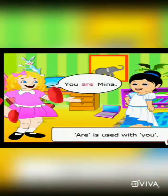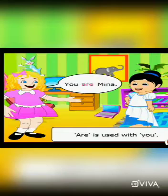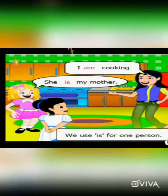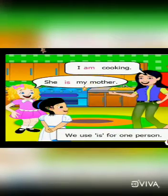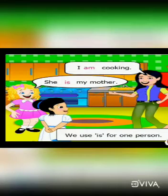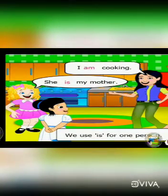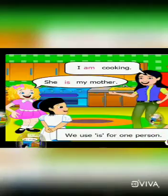Like: 'You are a boy.' 'Are' is used with 'you'. Ritu says: 'She is my mother.' We use 'is' for one person, one object, or one animal. For example: 'The car is beautiful.' When we are talking about one person, one object, or one animal, we use 'is' after that noun or pronoun.